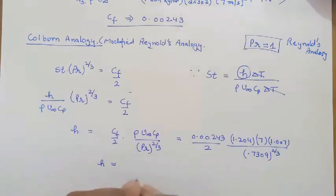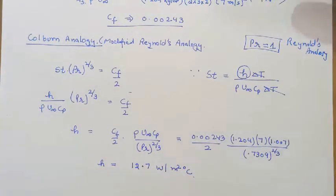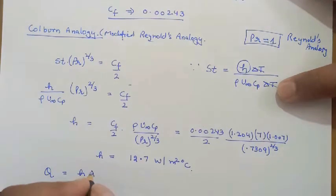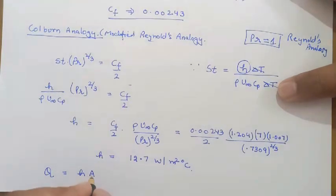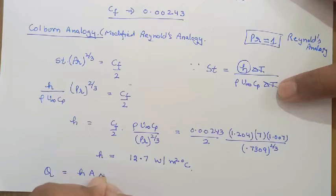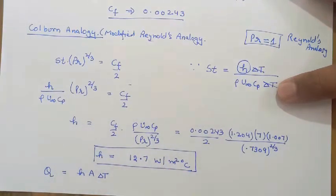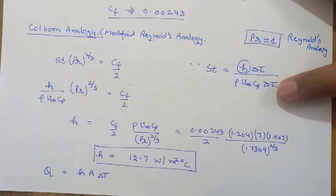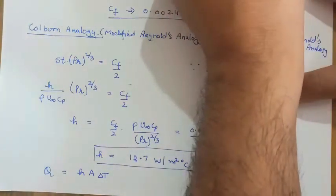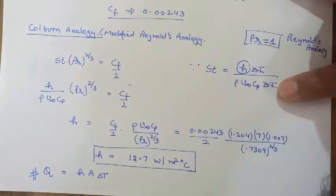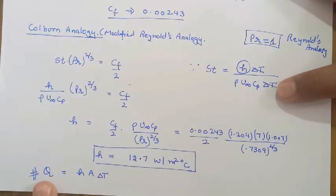Substituting the values — density 1.204, velocity 7, Cp 1.007 — divided by Prandtl number 0.7309 to the power 2/3, H comes to be 12.7 watt per meter square degree. To calculate Q, we use Q equals H times A times delta T. However, since the surface temperature is not given, we are unable to calculate Q. If the surface temperature were given, we could easily calculate the heat transfer from the flat plate.